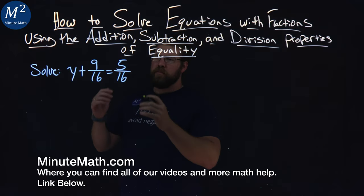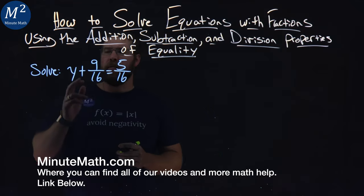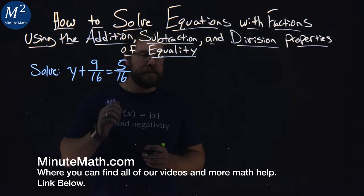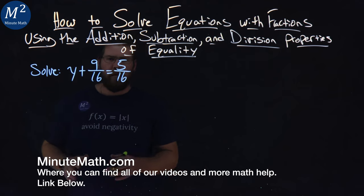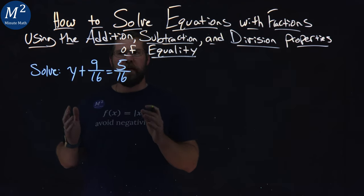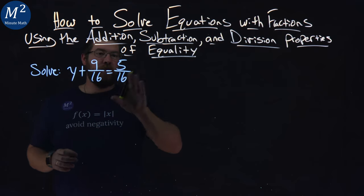We're given this problem right here. We want to solve y plus 9 over 16 equals 5 over 16. Well, right here, I'm kind of dealing with my subtraction property of equality, I'm thinking. I want to bring the 9 16ths to the right.